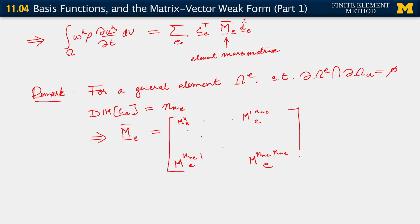All right? It should be obvious that this is a square matrix with dimension n_n^e times n_n^e. What more can we say about it?